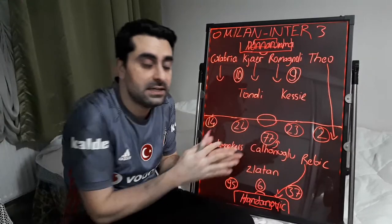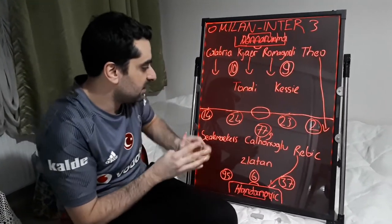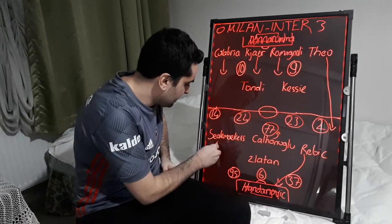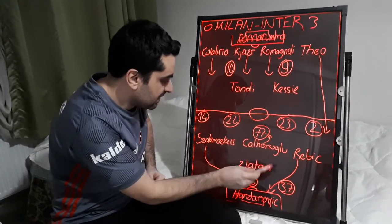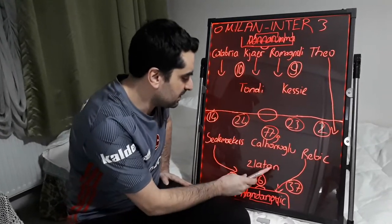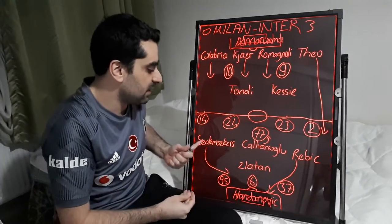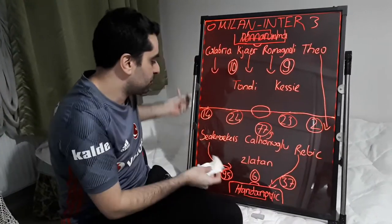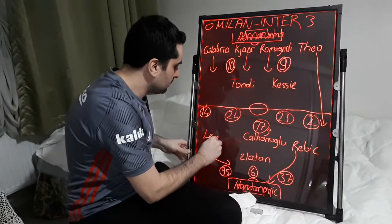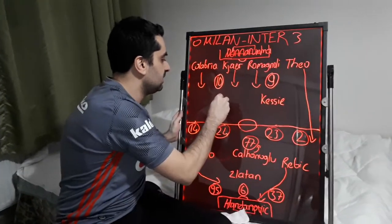Pioli didn't make any substitution at the beginning of the second half. But in the beginning of the second half, Milan found some goal positions. Saelemaekers centered the ball into the penalty area. Zlatan's header at the back post was saved by goalkeeper Handanovic. Zlatan found two goal positions in the penalty area. In the second half, Pioli made substitutions: Saelemaekers out and Leao in, Tonali out and Meite in at the centre of midfield.